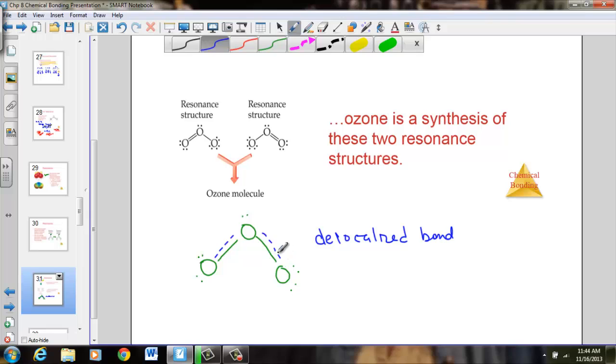What that means is that I have a delocalized bond. The electron pair that's being shared between these oxygens sometimes is found here, but sometimes, in an equal amount of time, it's found going in this direction. It is delocalized. It is not concentrated in one specific region, but found across a broader area between both of the atoms bonded to the central atom. A delocalized bond, one that exhibits resonance.